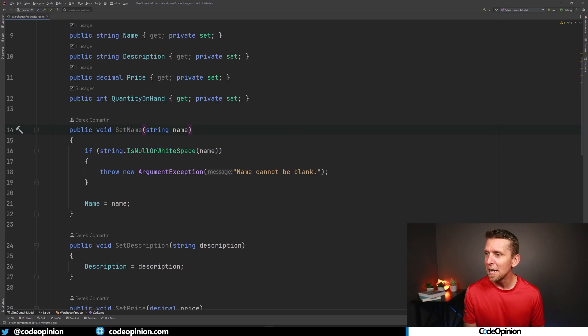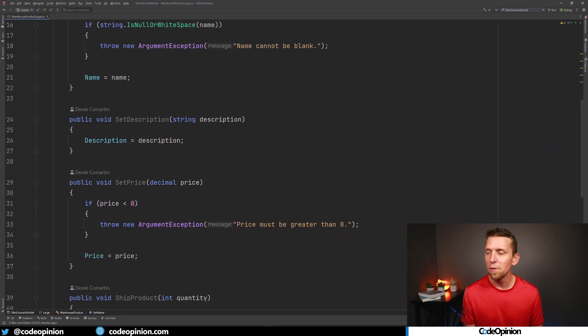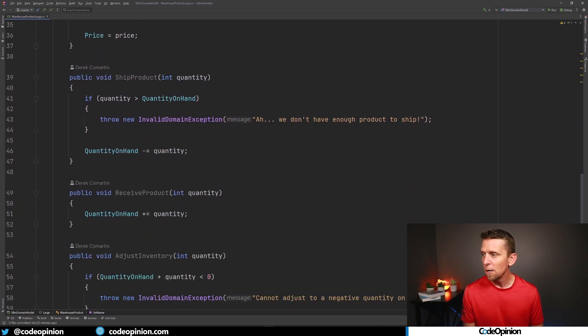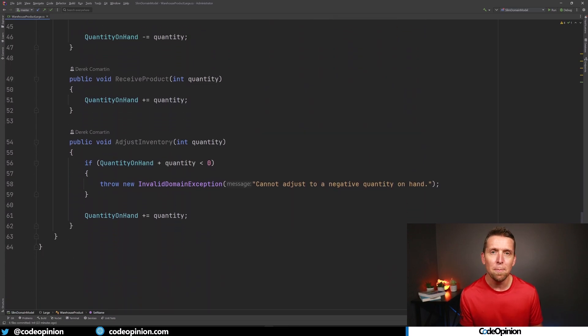And this is still kind of real world though because some of these would be trivial. We have things like the name can't be blank. The description, there's nothing here. It's just straight setting it. The price, making sure that it's greater than zero. And then we have some related to shipping the product, making sure that we have enough quantity on hand. Receiving is pretty straightforward. Doing an inventory adjustment, same type of thing. We can't do one where we end up in a negative quantity on hand.